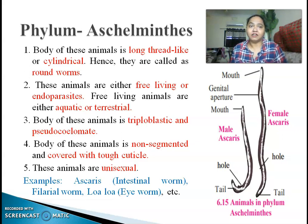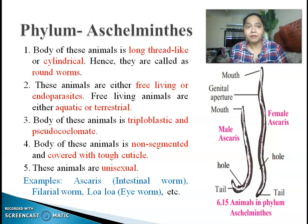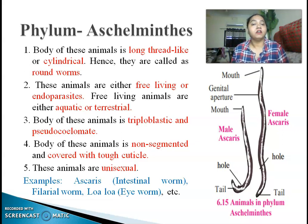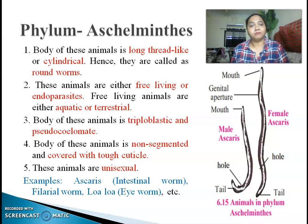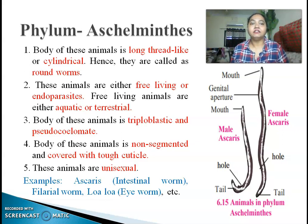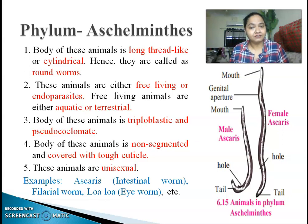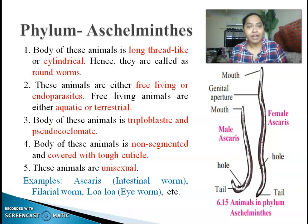Animals under the Aschelminthes phylum are unisexual, meaning they have only one type of sexual reproductive organ in their body — male and female are differentiated in this phylum. Examples include Ascaris (the intestinal worm), filarial worm, and Loa loa, that is the eye worm.